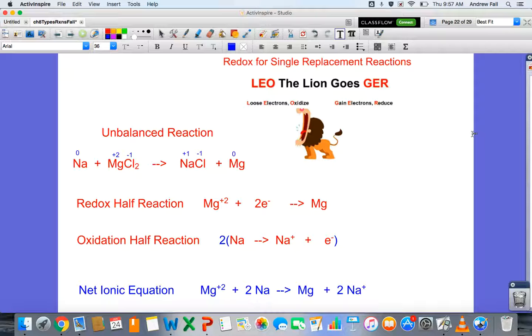Hence the phrase 'LEO the lion goes GER.' In this reaction, we have sodium displacing magnesium in the compound magnesium chloride. Sodium as a neutral element has no charge in its reactant state.